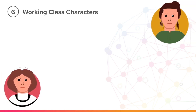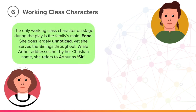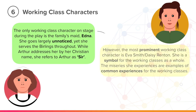If we are looking at class in the play, it is very important to look at the portrayal of the working class characters. The only working class character on stage during the play is the family's maid, Edna. She goes largely unnoticed, has very few lines of dialogue, yet she serves the Birlings throughout. While Arthur addresses her by her Christian name, Edna, she refers to Arthur as Sir. This is because of their classes and her position as a servant — the arrangement is naturally unequal.